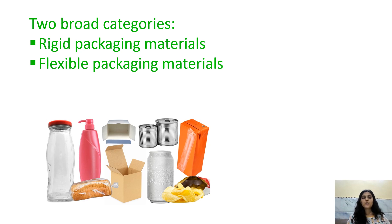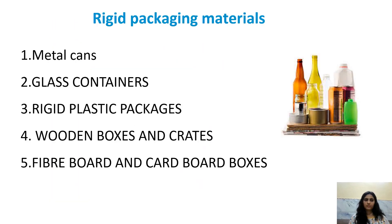Rigid packaging materials include metal cans — for example, soft drink cans — glass containers used in the beverage industry such as beer, rigid plastic packages, wooden boxes and crates used for transportation of fruits and vegetables, and fiberboard and cardboard boxes used for transportation of snacks or ready-to-eat foods.